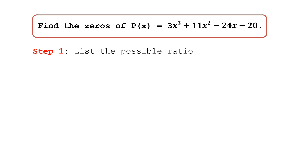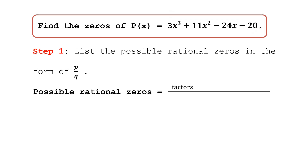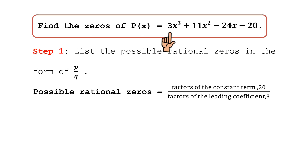We have the given: find the zeros of p(x) = 3x³ + 11x² - 24x - 20. Step number one: list the possible rational zeros in the form of p over q. Here p is our constant term and q is our leading coefficient. So p is 20 and q is 3. In the numerator we list all factors of the constant term 20, and in the denominator all factors of the leading coefficient 3.